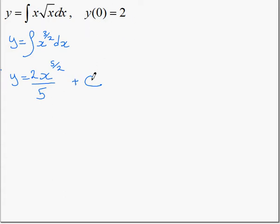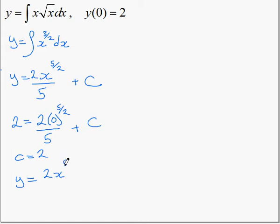Now we use our initial information to solve for C. When x is 0, y is 2. So 2 equals (2/5) times 0^(5/2) plus C, in which case C equals 2. Rewriting for y, we see that y is (2/5)x^(5/2) + 2.